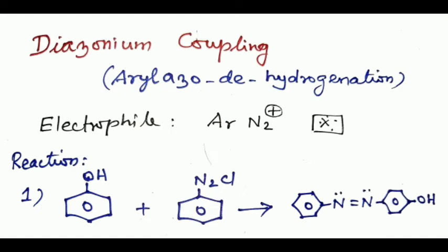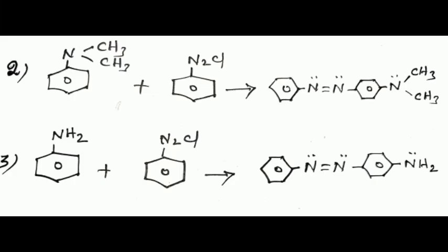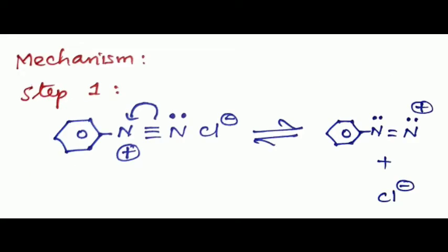For example, phenol combined with benzene diazonium chloride forms para-hydroxyazobenzene. Similarly, N,N-dimethylaniline combined with benzene diazonium chloride forms para-dimethylaminoazobenzene, and aniline combined with benzene diazonium chloride forms para-aminoazobenzene.